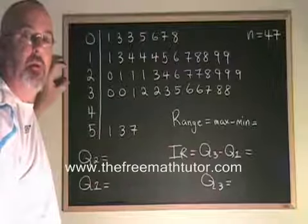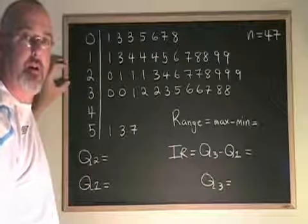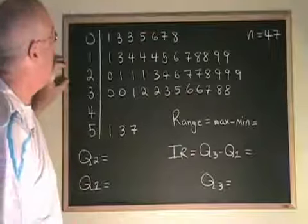Here's another example where we will find range and interquartile range. This data is in a stem and leaf table.